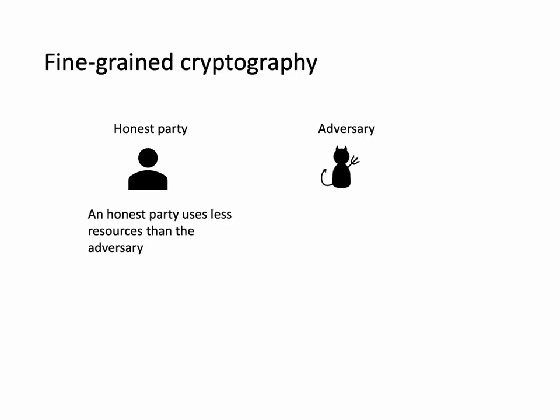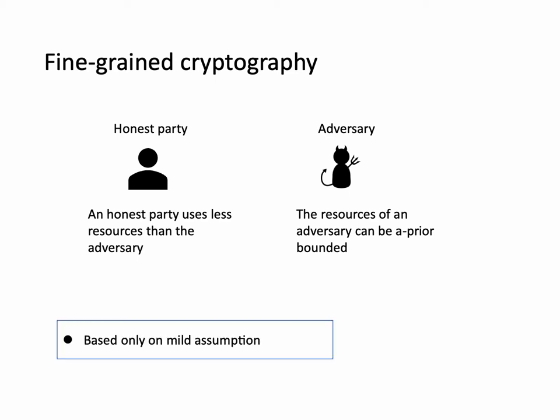Fine-grained cryptography gives us a way to approach this problem. In the fine-grained setting, we just require that the honest party uses less resources than the adversary, and the resources of the adversary can be explicitly bounded. Since the power of the adversary is limited, it's possible to construct primitives based on very mild assumptions. But notice that in the fine-grained setting, we also require that the scheme should be quite efficient.